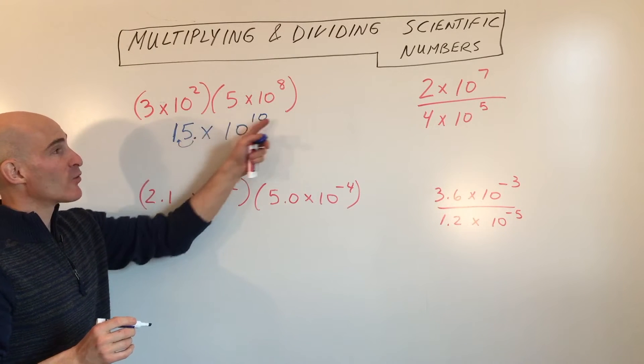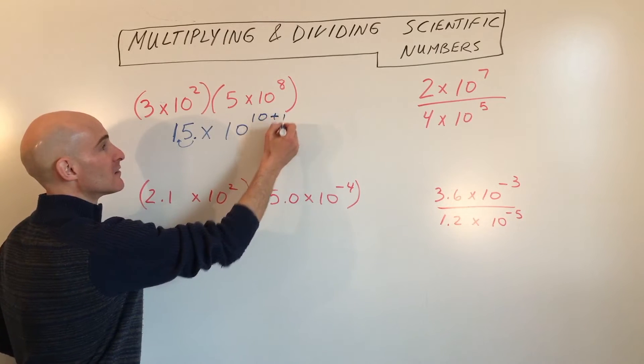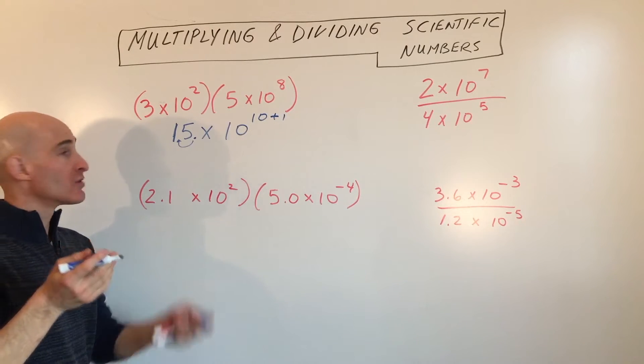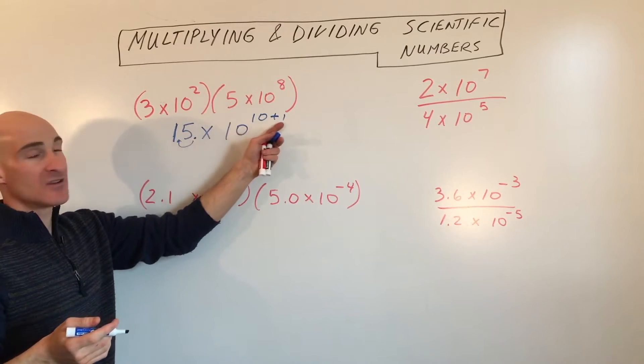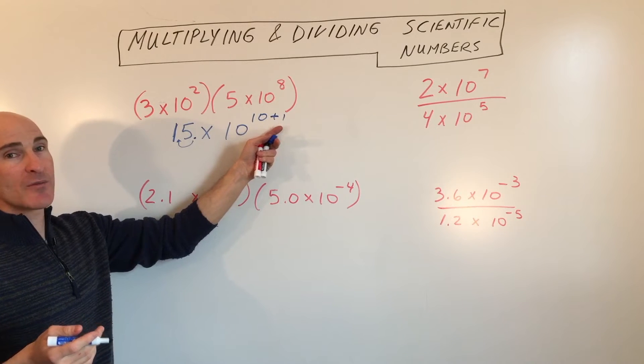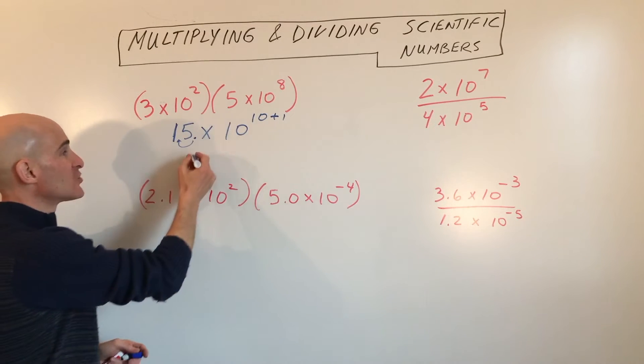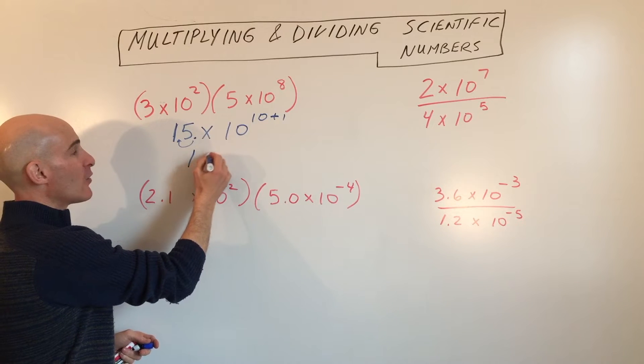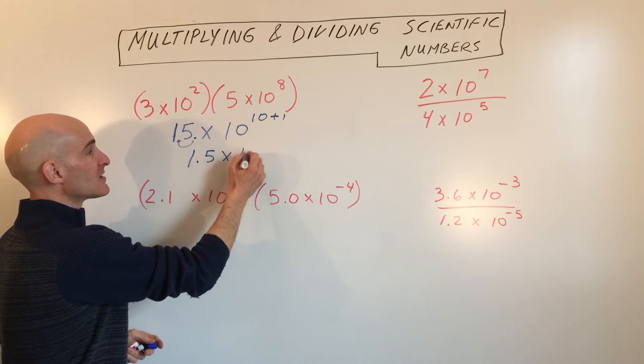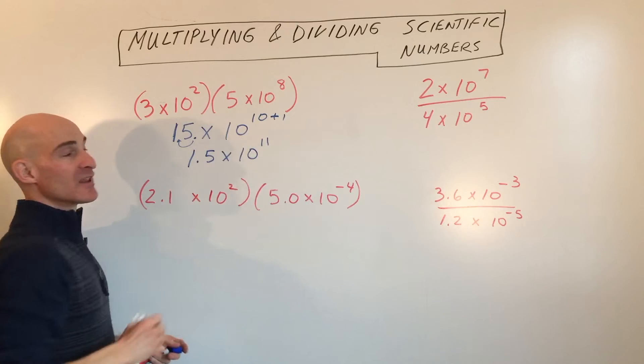So when we move this to the left one place, we're making this overall number smaller by a power of 10. To counterbalance that, we're going to add 1 to this exponent. So you're making this smaller by a power of 10, you're making this larger by a power of 10. Those counterbalance each other. We haven't changed the overall value of the number. And now we have 1.5 times 10 to the 11th power.